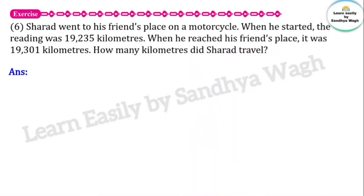Next: Sharad went to his friend's place on a motorcycle. When he started, the reading was 19,235 kilometers. When he reached his friend's place, it was 19,301 kilometers. How many kilometers did Sharad travel?